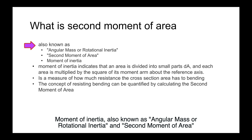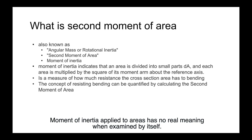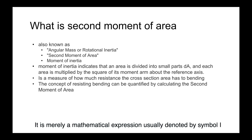Moment of inertia, also known as angular mass or rotational inertia, and second moment of area, is the inertia of a rotating body with respect to its rotation. Moment of inertia applied to areas has no real meaning when examined by itself — it is merely a mathematical expression, usually denoted by the symbol I.